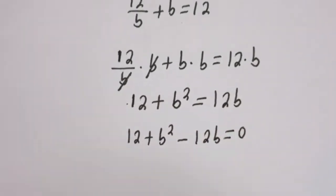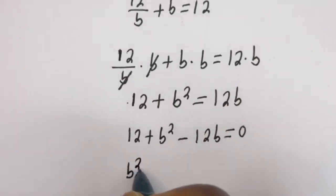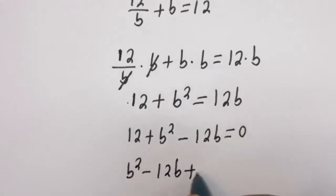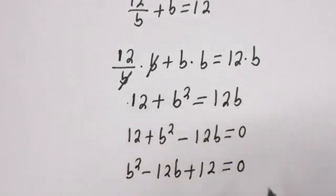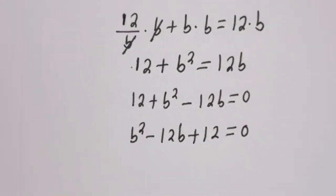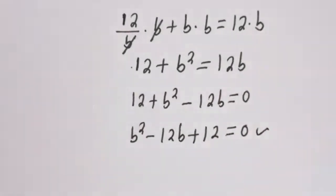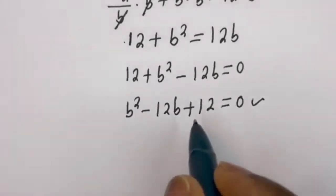We can rearrange this, that is b squared minus 12b plus 12 is equal to 0. So this is a quadratic equation, which can be solved using the quadratic general formula.